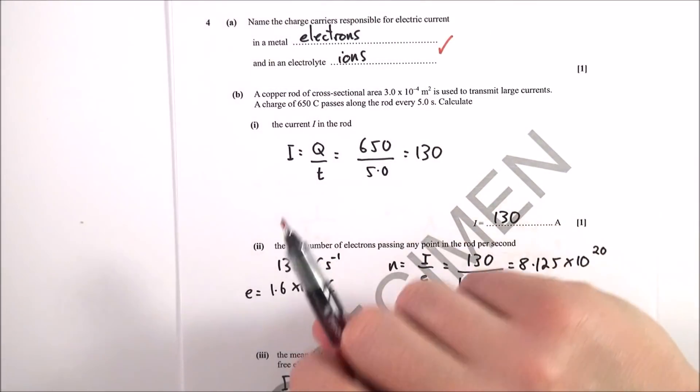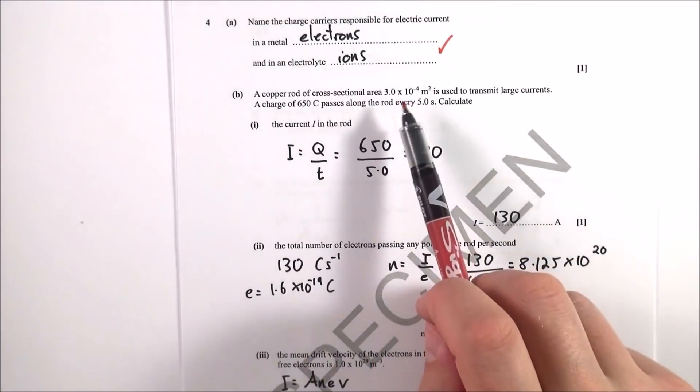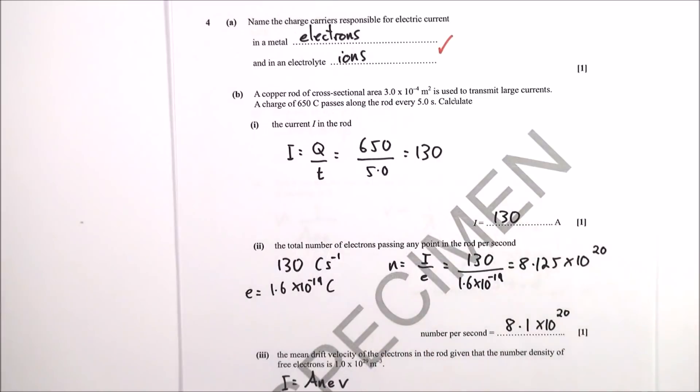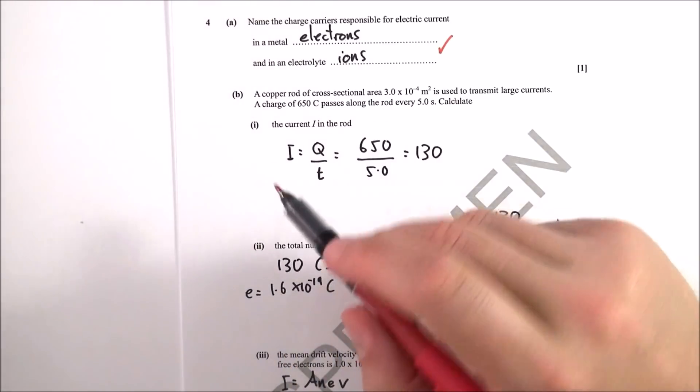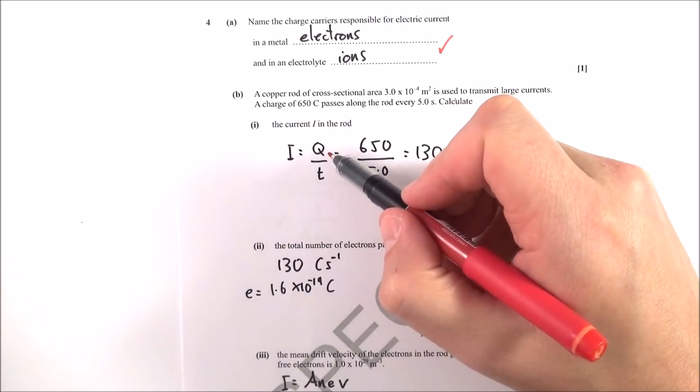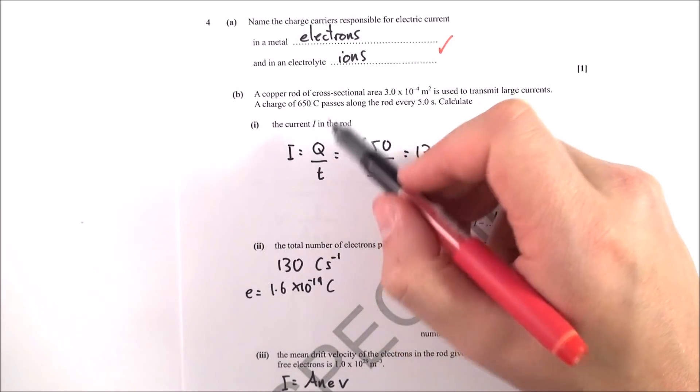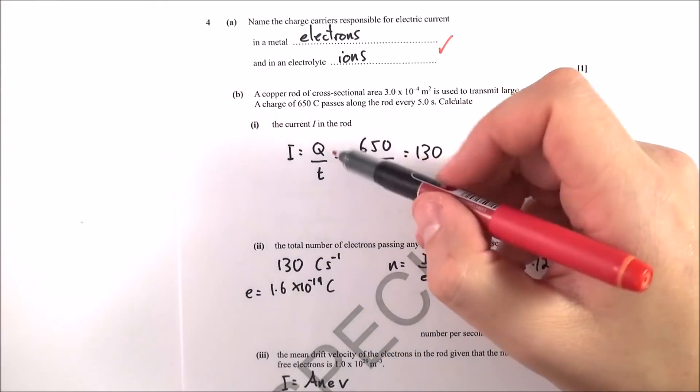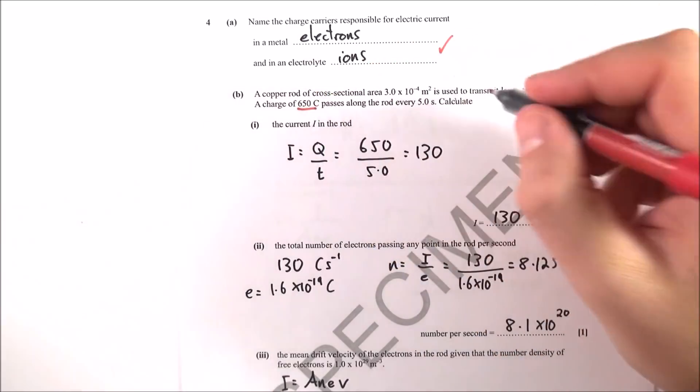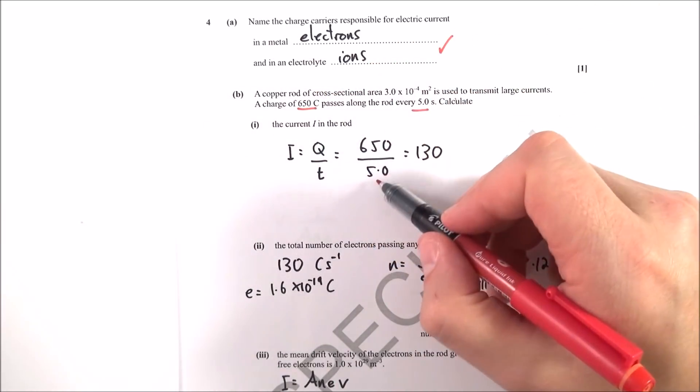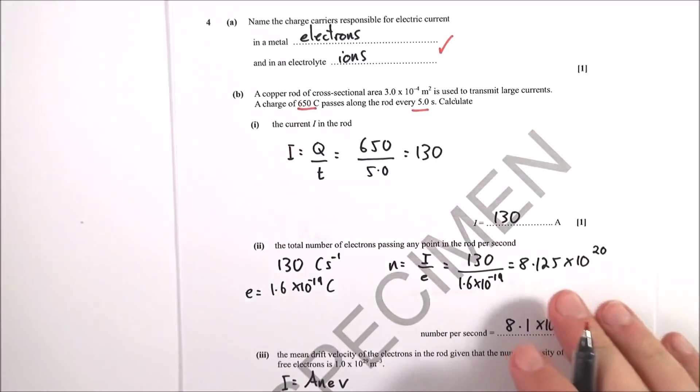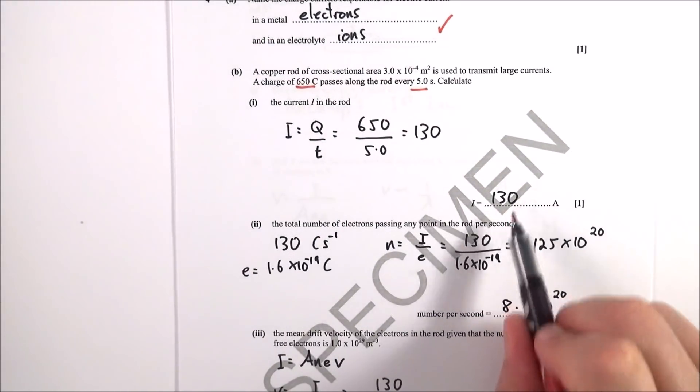The next one, you've got loads of data here. You've got the area, you've got the charge, and you've got the time. So first of all, what's the current? Well, the intensity of the current is equal to the quantity of charge divided by the time, and that's why you've got Q's and I's there. So you've been given the data in question, and therefore 650 over 5 is equal to 130, so the current is 130 amps.